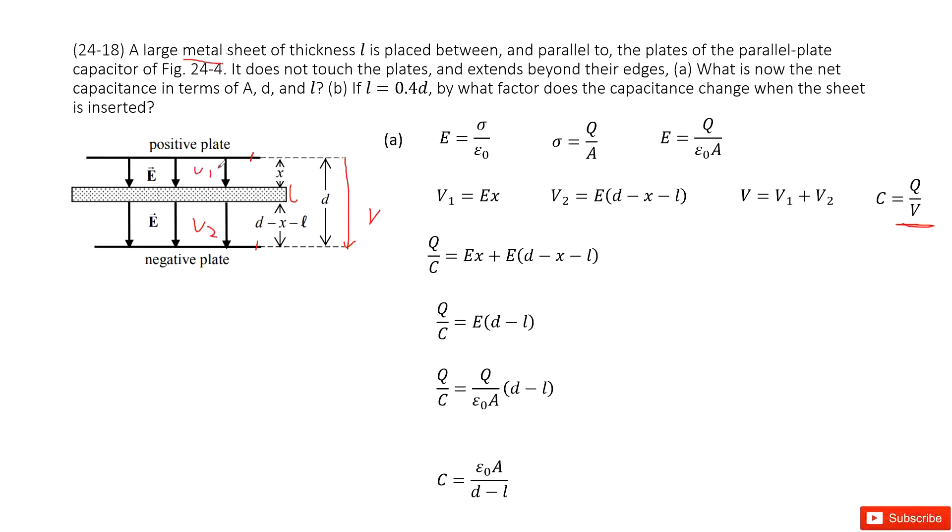There is no potential difference within the metal sheet—this is a conductor. Now how can you write V1? We can use electric field times the distance L for V1, and we can also use the electric field times the distance D minus x minus L for V2.